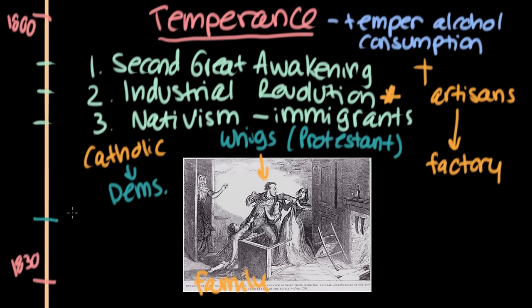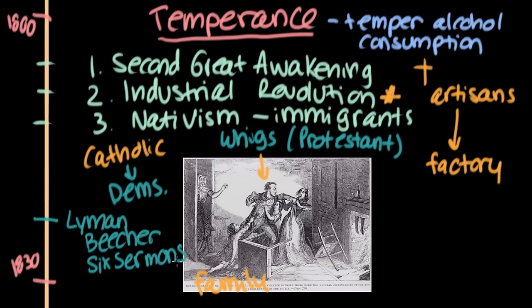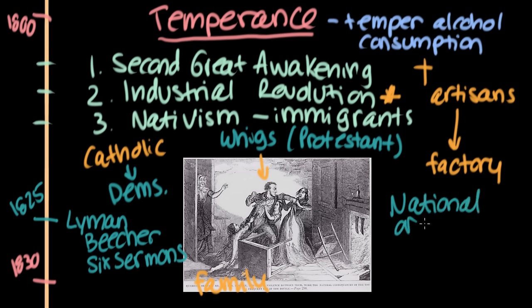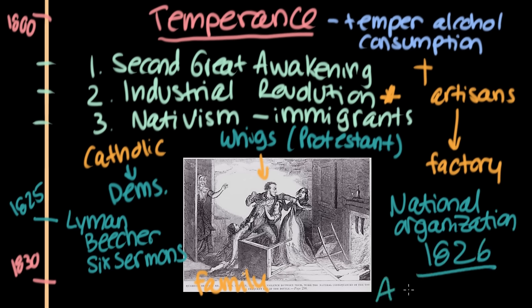In 1825, this really famous preacher, Lyman Beecher, gave his sermons on the sins of alcohol. These sermons in 1825 solidified this idea in the American mind that it was anti-Christian to be a huge drinker, and this idea really took root. There started to be not just more state-level or community-level societies against drinking — you see the first-ever national organization. The first national temperance society was in 1826, with the American Temperance Society, the ATS.